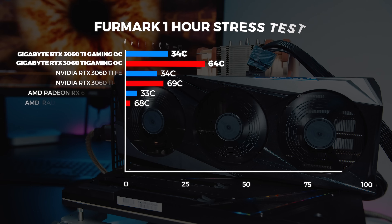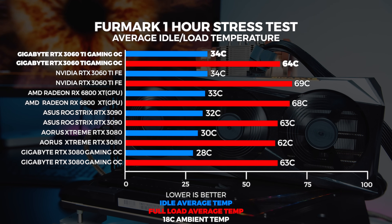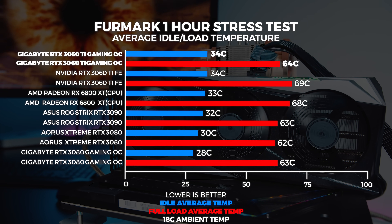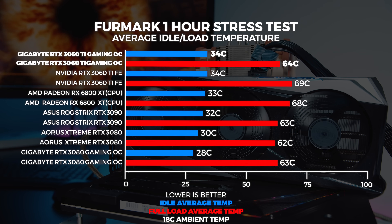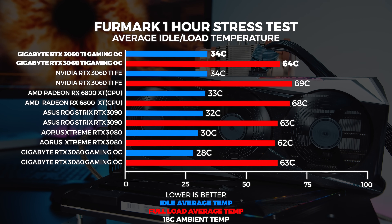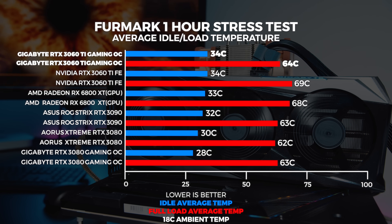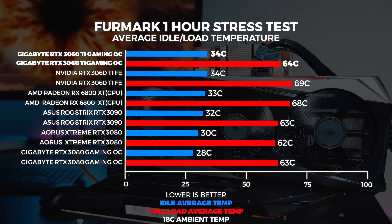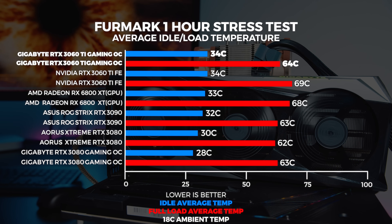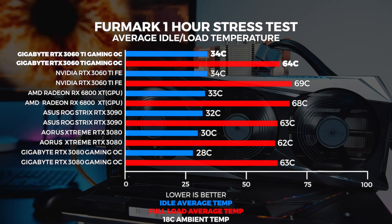We ran our one-hour stress test in Furmark and couldn't get the 3060 Ti Gaming OC above 64 degrees in our 18-degree climate-controlled office. This is a really good result — it runs about 5 degrees cooler than the Founders Edition. The Gaming OC's cooler is much larger, but still, 5 degrees is 5 degrees. Be aware that we're running on an open air test system, so results in a closed system will be far different. However, we use the same testing parameters for every single video, so the results are still relevant for comparison.